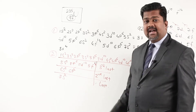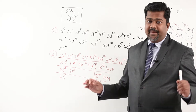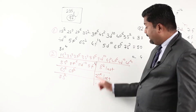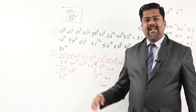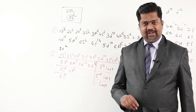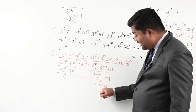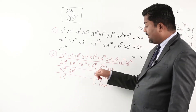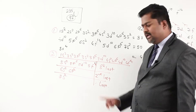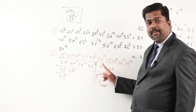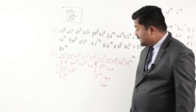So the last shell is called the ultimate shell, the second last is the penultimate shell, and the third last is called the pre-penultimate shell. To revise: ultimate is last, penultimate is second last, pre-penultimate is third last.